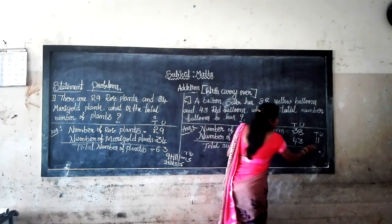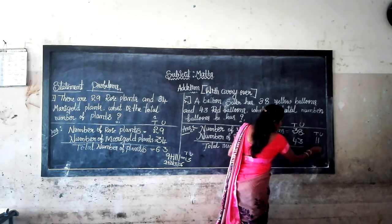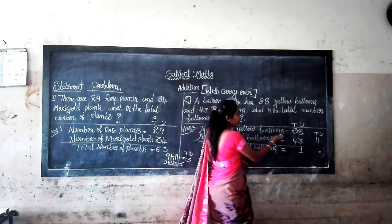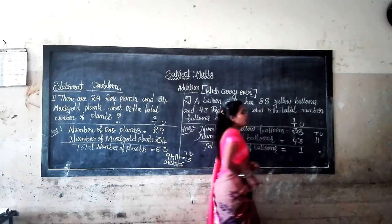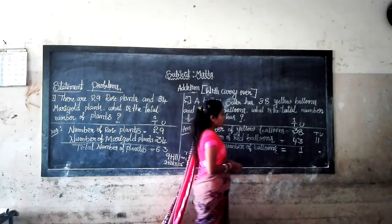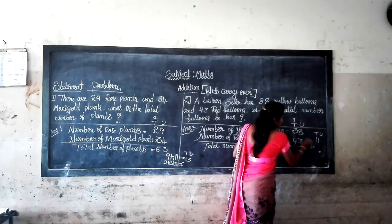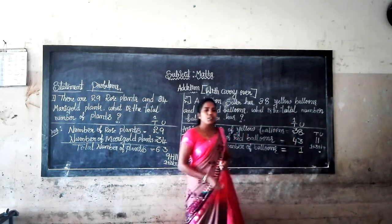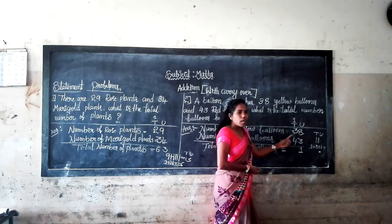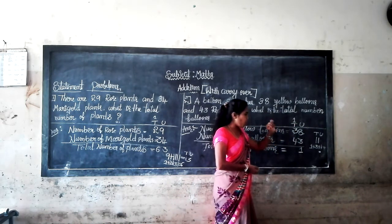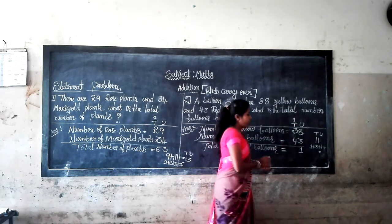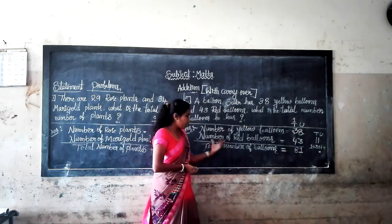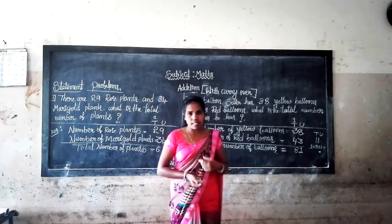1 is the unit place digit, which we write below the unit place. We carry 1 over to the tens place. Now we add 1 plus 3 plus 4. 1 plus 3 equals 4, then 4 plus 4 equals 8. So total number of balloons is 81.